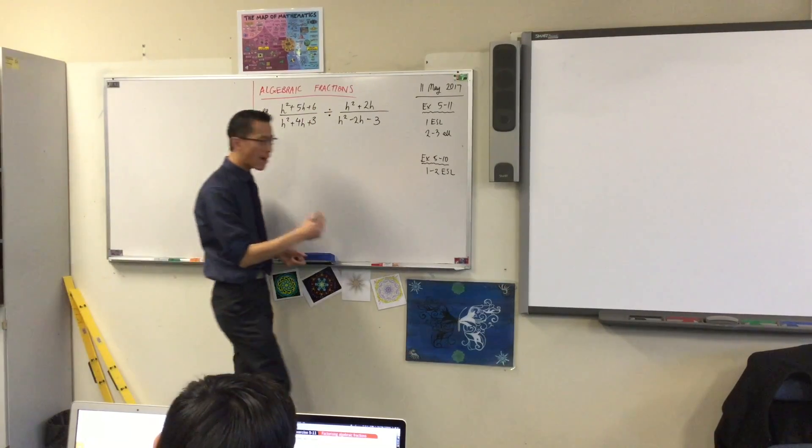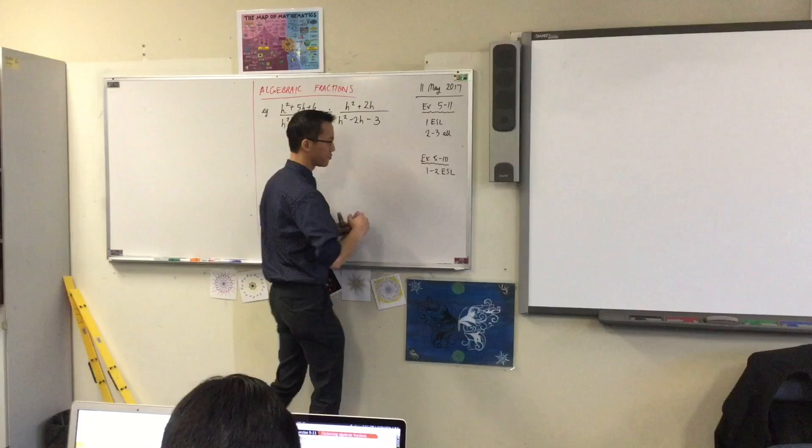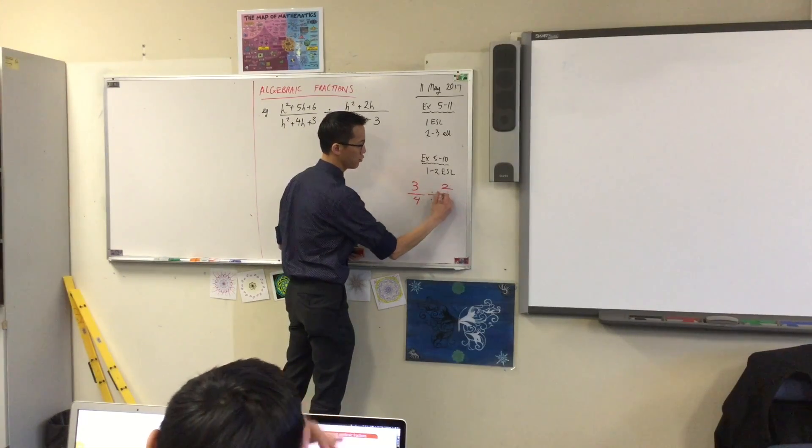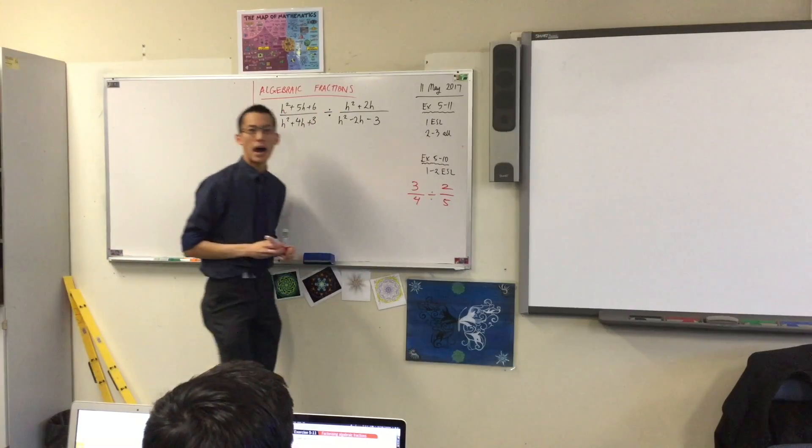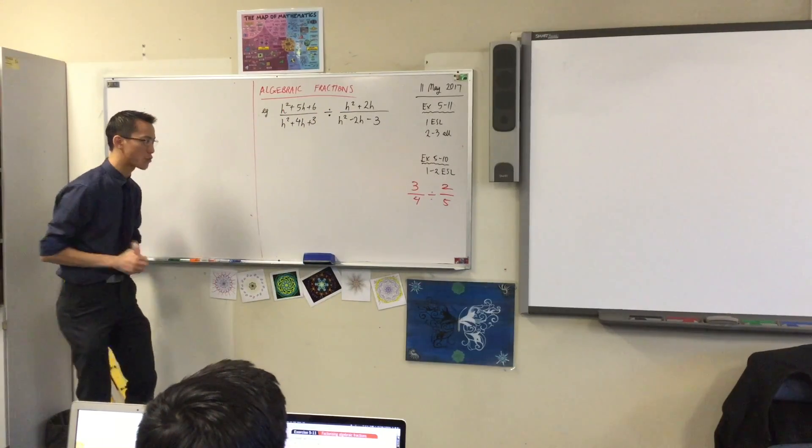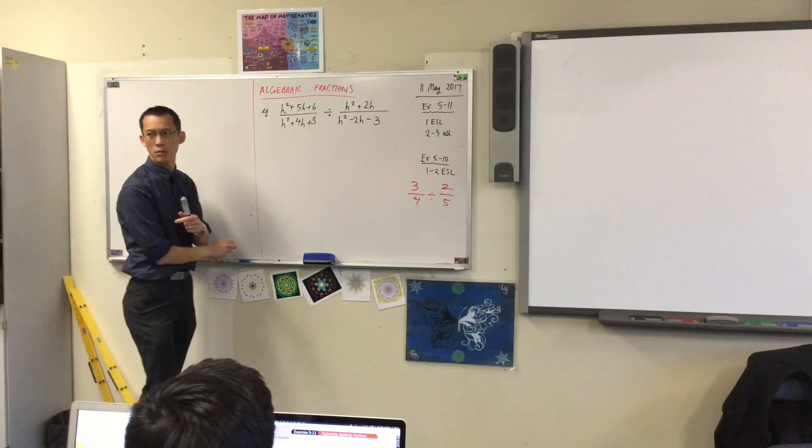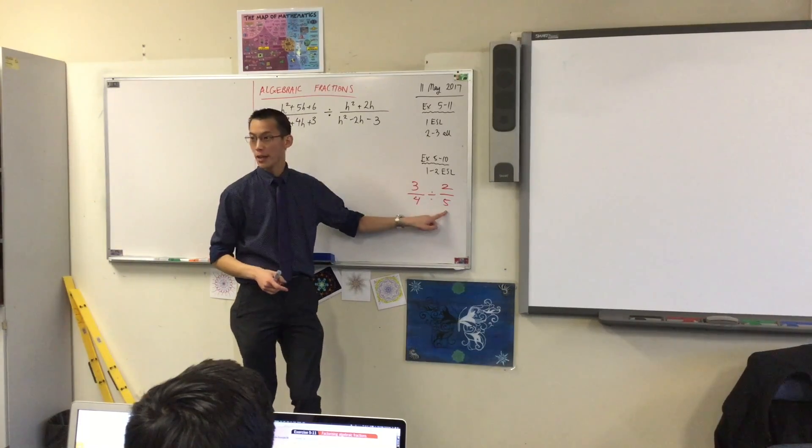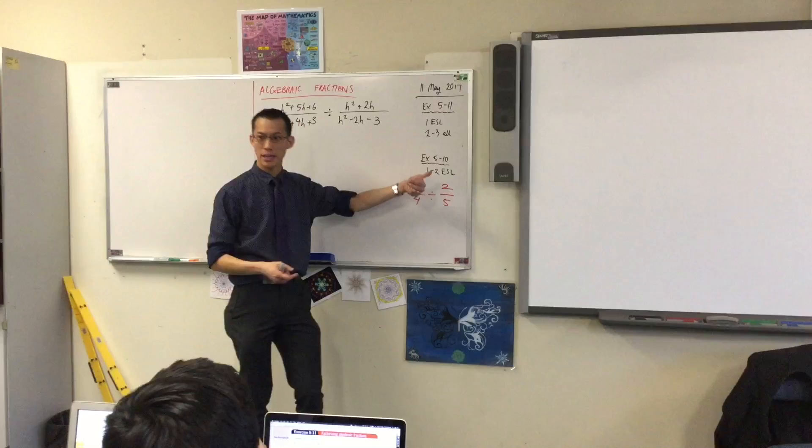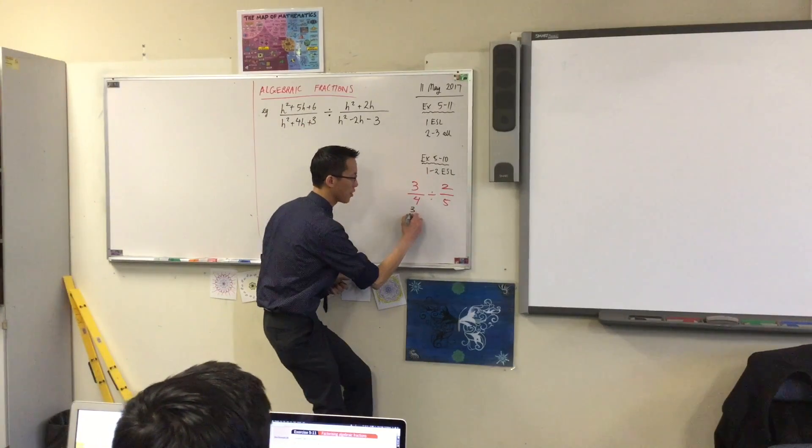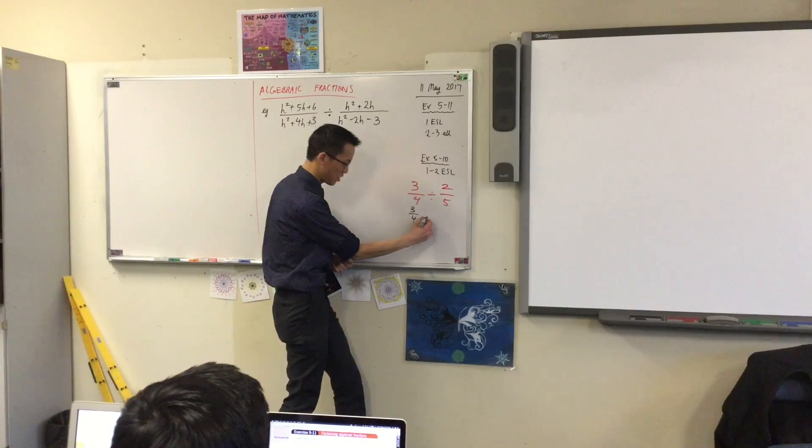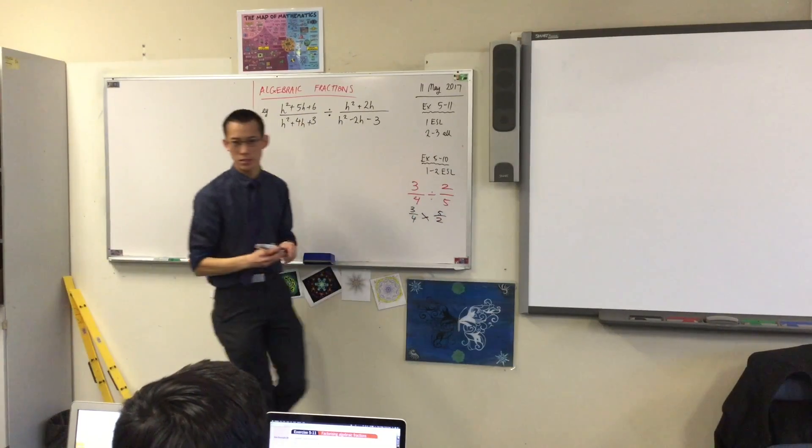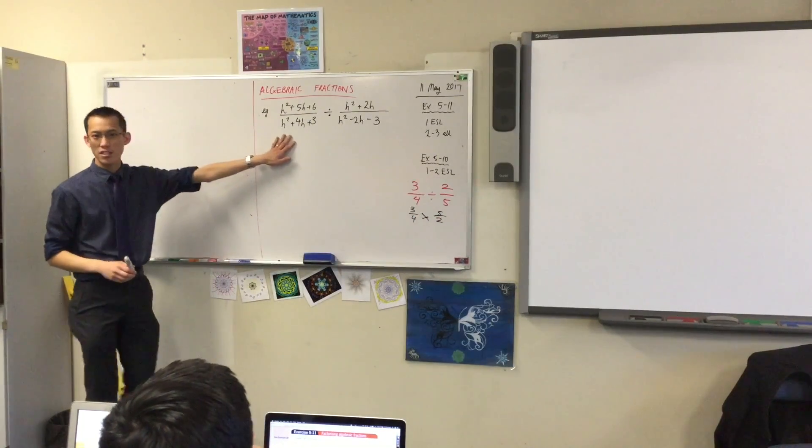If I gave you as an example three quarters divided by two-fifths, a pair of fractions with no algebra, what would you do with those? Very good. I can take the reciprocal, flip it upside down, and that would have the effect of changing division into multiplication. So that's what you're going to do.